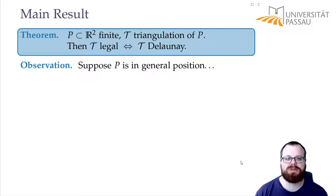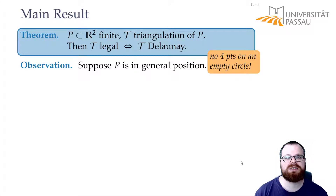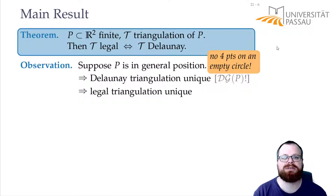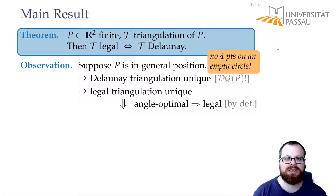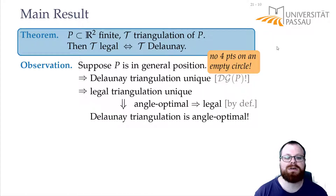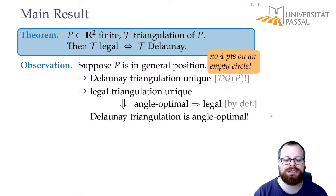We still have to do the step to angle-optimality. Let's first assume that our point set is in general position — meaning no four points lie on a common circle. If we have this, then our Delaunay triangulation is unique; it is exactly the Delaunay graph. Since we have the equivalence between legal and Delaunay, there is a unique legal triangulation. All angle-optimal triangulations are legal by definition, and at least one angle-optimal triangulation exists. So it has to be the unique legal one — the Delaunay triangulation gives us the unique angle-optimal triangulation.